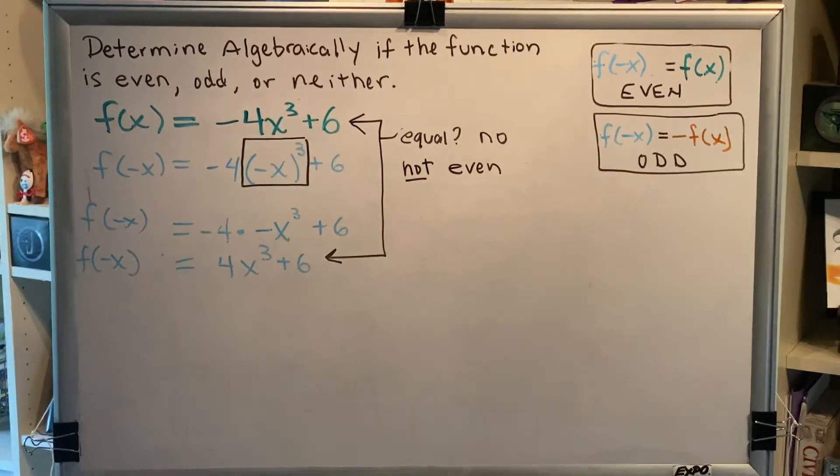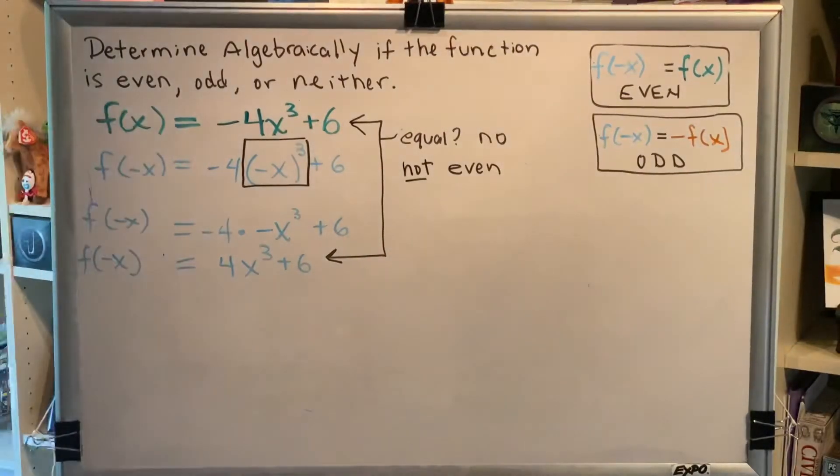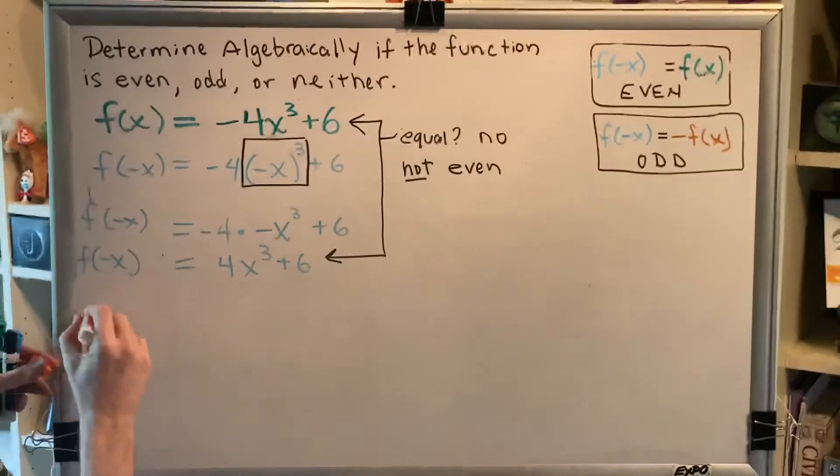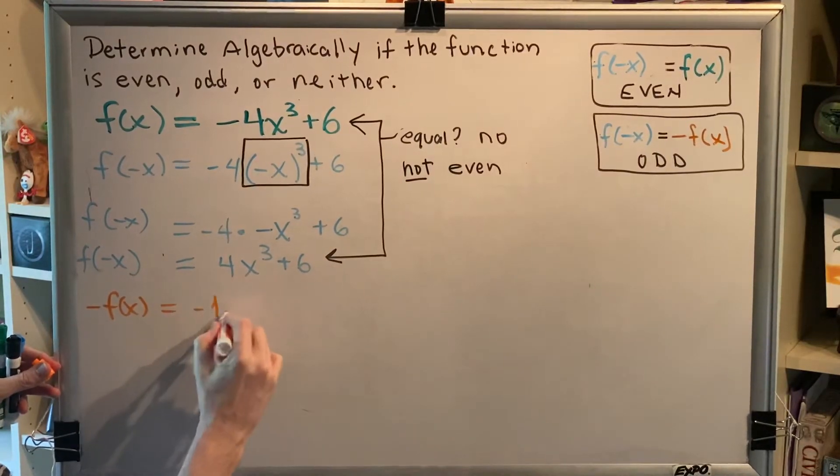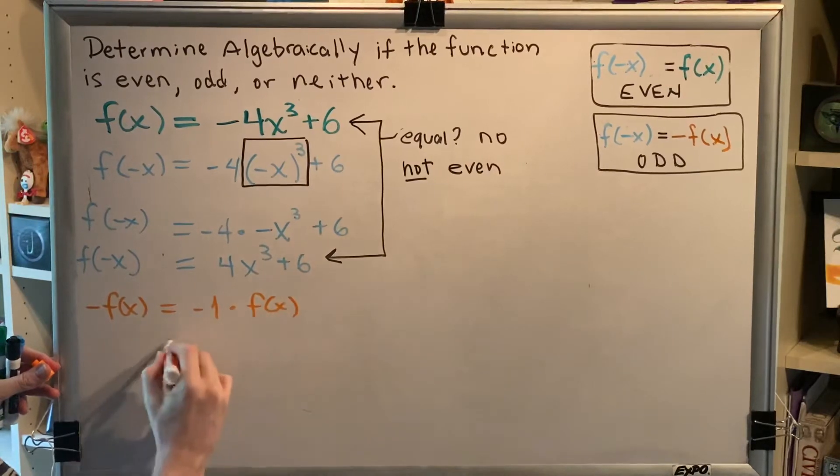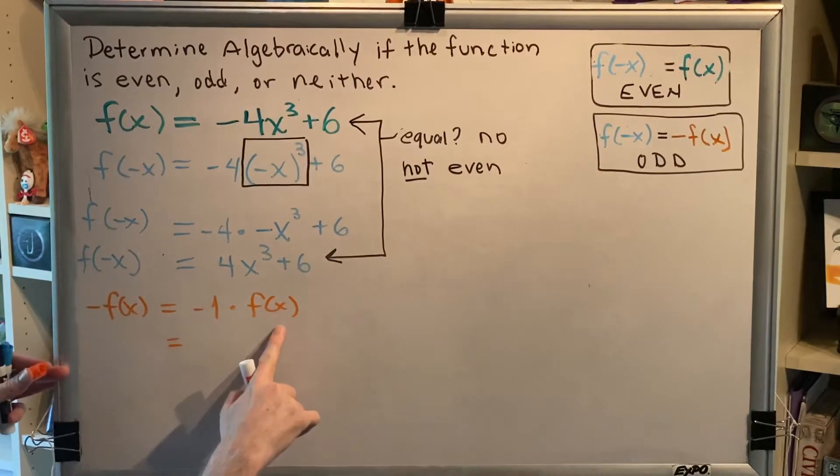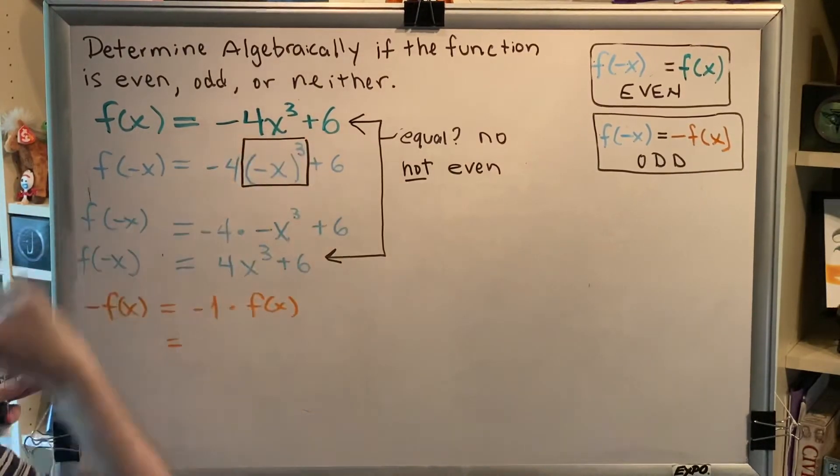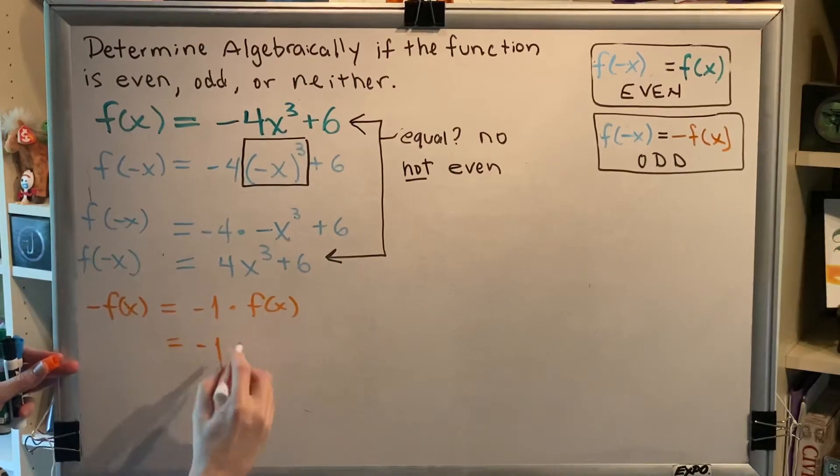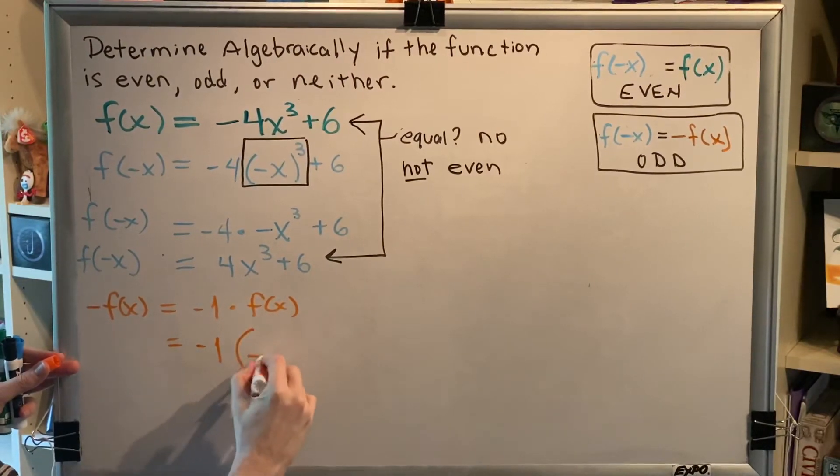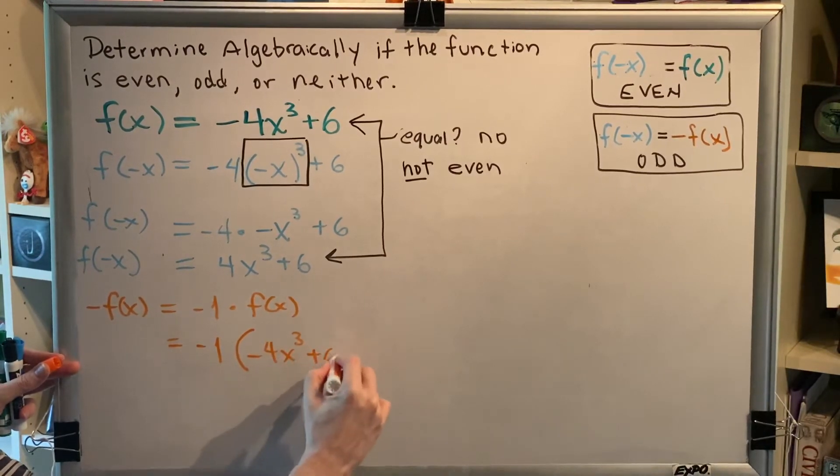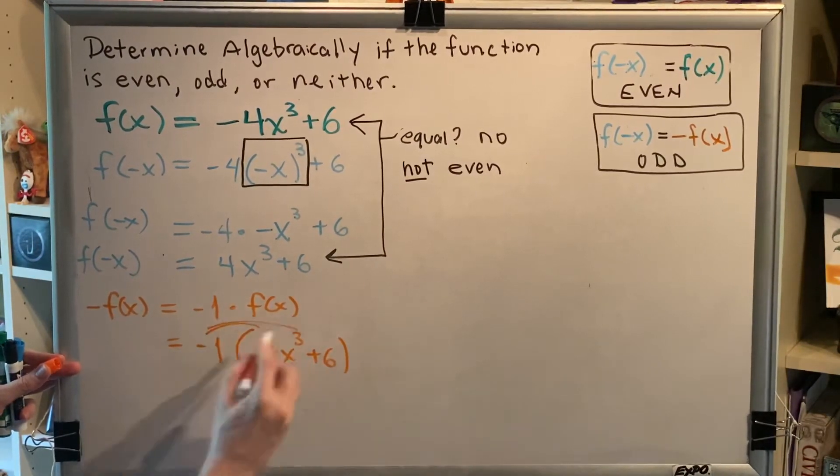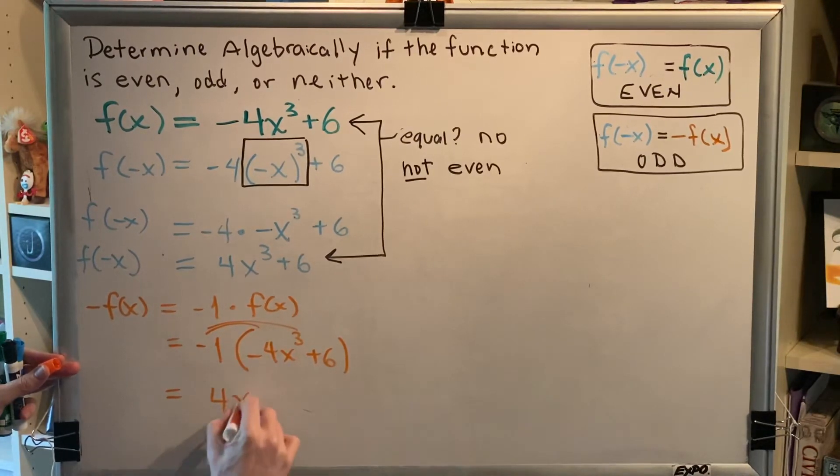So then we'll move on to the orange and find negative f of x. Well, negative f of x is the same thing as negative 1 times f of x. Because f of x has two terms, we're going to have to use parentheses here. So it'd be negative 1 times the negative 4x cubed plus 6. Distributing the negative gives us positive 4x cubed minus 6.